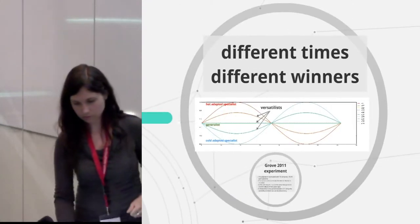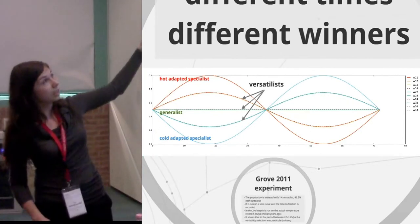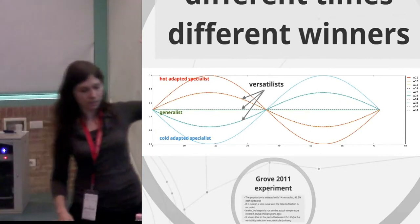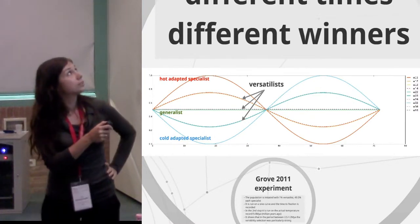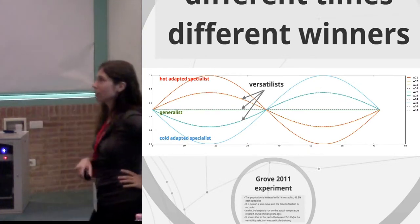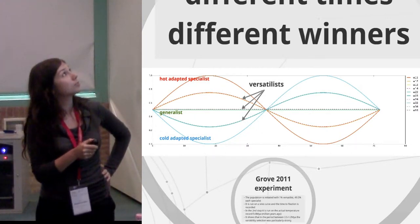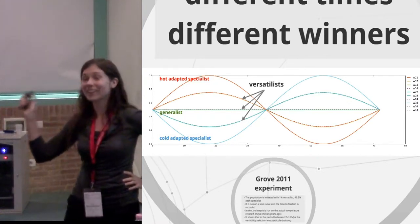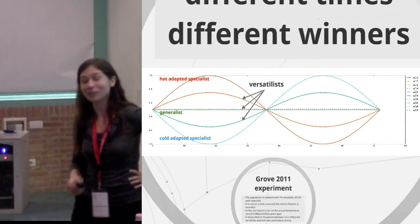And so the result of that, I mean, just to make it show it what's happening. Imagine on the right hand side, oh, I can actually point to it. Yeah. So we start, we start here and we do a sine wave of temperature. So first it gets hot and the hot adapted specialists are like, oh yeah, oh yeah, it's doing great. And the cold adapted specialists are just like, yeah, okay, we all die.